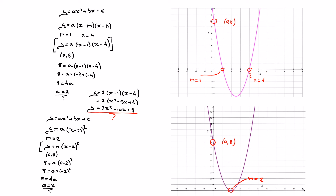Once again we find a equals two. Using a equals two in our equation gives y equals two times x minus two squared. Expanding, that's two times x squared minus four x plus four, and distributing the two gives y equals two x squared minus eight x plus eight — that's this parabola's equation.